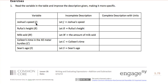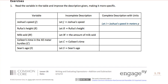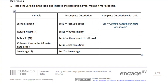Joshua's speed, or j, is the variable. An incomplete description would be: let j equal Joshua's speed. However, what we really need to know is let j equal Joshua's speed in meters per second, which is more specific and tells us actually something about the situation.